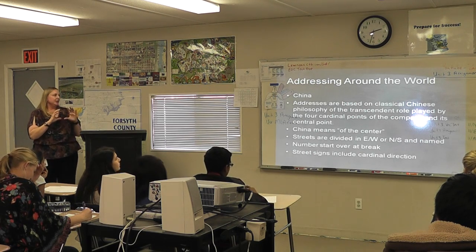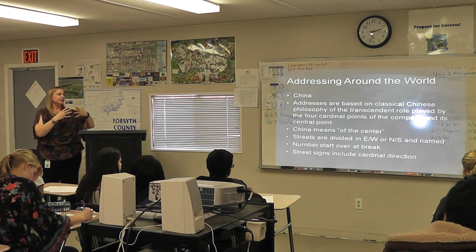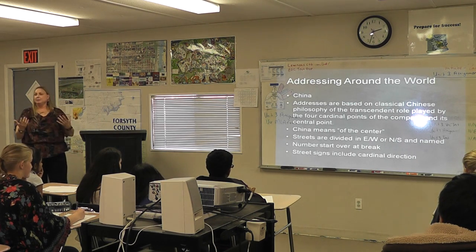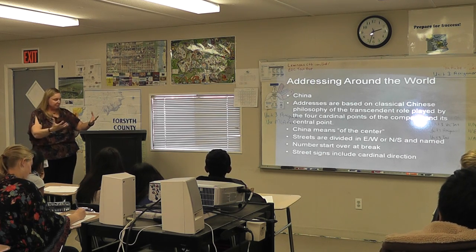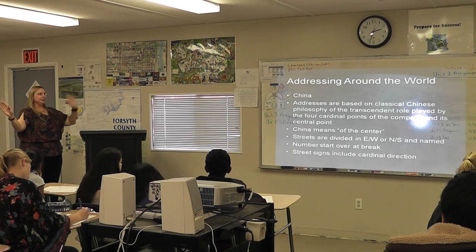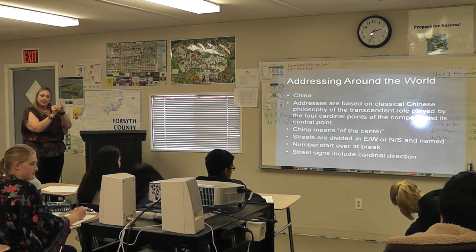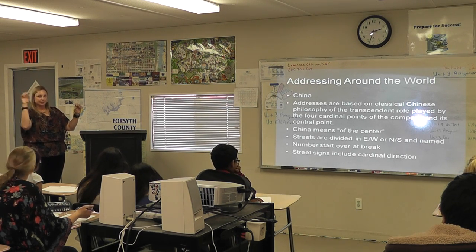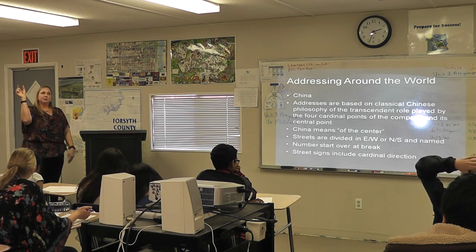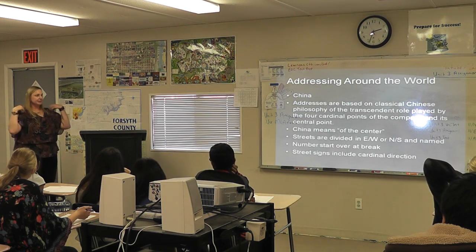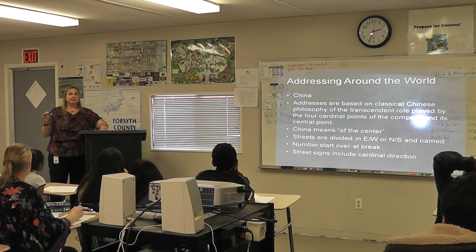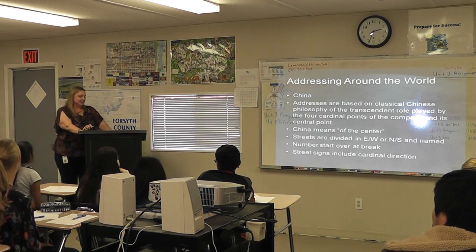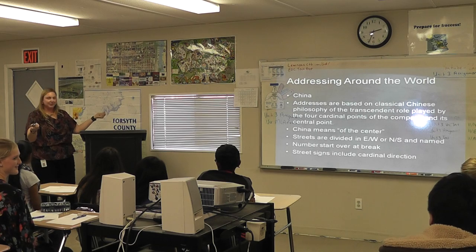In China, the whole addressing system is based on respect for the compass and cardinal directions. Even the name China means 'the center' — that's a big part of their culture. All streets are divided into east, west, north, or south, starting from a central point. Numbers go out from there, and street signs tell you what quadrant of the city you're in. So as you walk around the city, if you know the system, you actually know where you are not only on the block but in the great scheme of the whole city. And ten points to Gryffindor — the Chinese invented the compass.